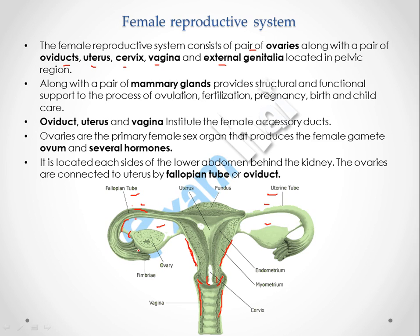The ovary is the female gonad which produces the female gamete — the ovum or egg — and also produces several hormones like estrogen and progesterone. These hormones are helpful in ovulation and also in the development of the mammary gland. The mammary gland is also part of the female reproductive system and provides nourishment to the newborn baby. The mammary gland is present in the thoracic region.